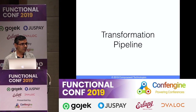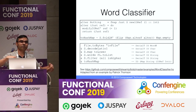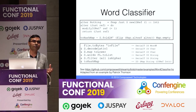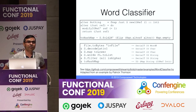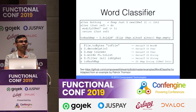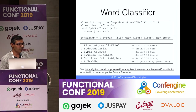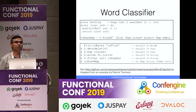Now let's look at transformation pipelines — how you transform one stream to another stream using filter, map, and other combinators. This is a word classifier example, originally by Patrick Thompson for the streaming library, adapted to Streamly.